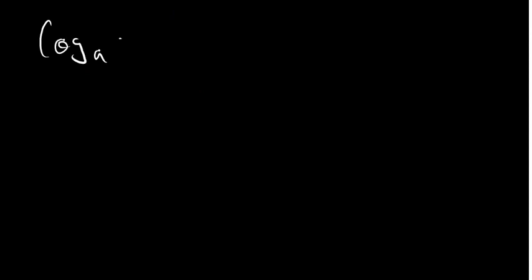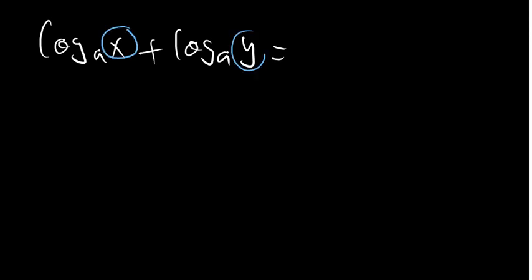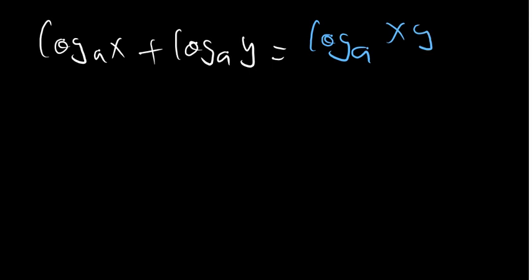Now let's talk about another principle. If we have log base A of X plus log base A of Y, we can condense this. As long as the bases are the same and we have a plus sign, we multiply the arguments: this equals log base A of (X times Y).